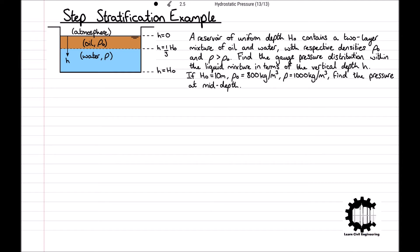In the last example we were working in terms of Z, the height from the base of the reservoir. However, now we are working in terms of h, the depth from the free surface of the reservoir. Therefore we will use the equation for pressure distribution where dP by dh equals rho times G.